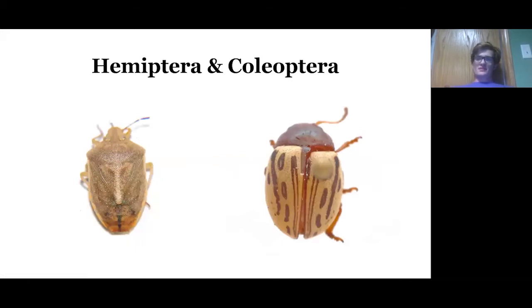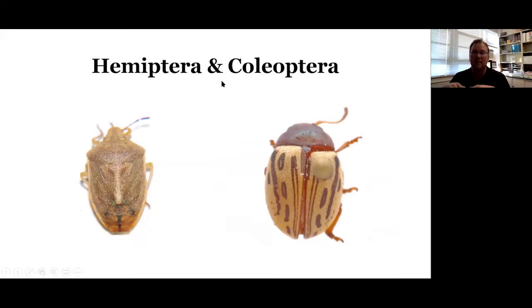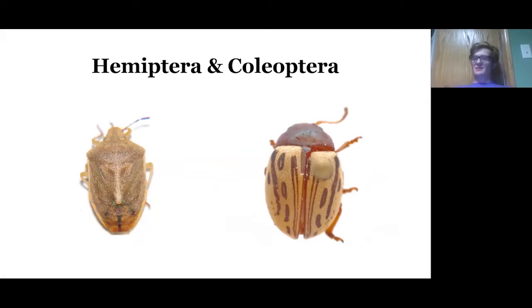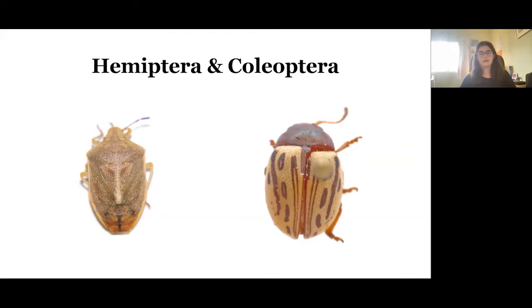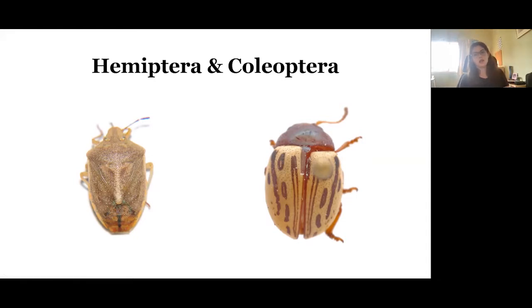Anybody want to take a shot at this one? The one on the left is from Hemiptera and the one on the right is from Coleoptera. You can tell because the Hemiptera will have sort of a triangle on its back, and beetles will generally have a shell that splits in the middle.